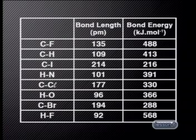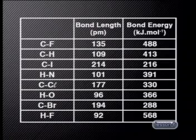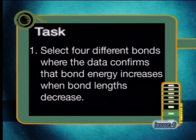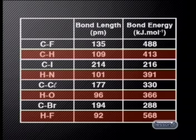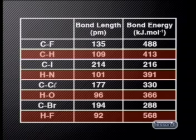To confirm this trend, we need to look at more data. Here is a table of bond length and bond energy data for different bonds. For today's task, select four different bonds where the data confirms that bond energy increases when bond length decreases, and draw a graph to show this trend clearly. When you examine the data, you will notice that some bond lengths are similar but bond energies are very different — check how the electronegativity number difference of the bonds varies, and see if you can determine a trend between electronegativity number difference, bond length, and bond energy.